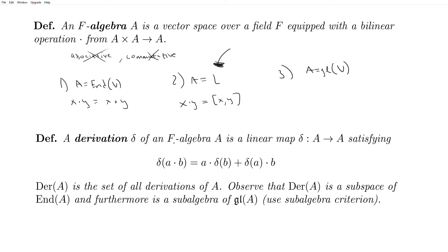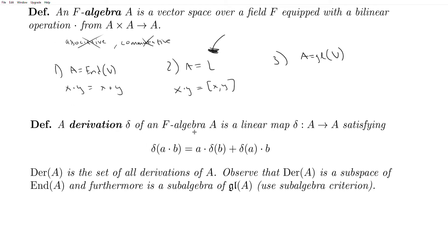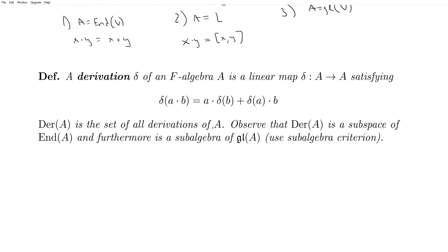And so an important class of maps on F-algebras are called derivations. And they're called derivations because they satisfy something called the product rule, which you should remember from calculus. And so this thing here is the product rule. And so a derivation delta of an F-algebra A is a linear map delta from A into A satisfying delta of A dot B is equal to A dot delta of B plus delta of A dot B, where dot is the operation that we endowed on our F-algebra.